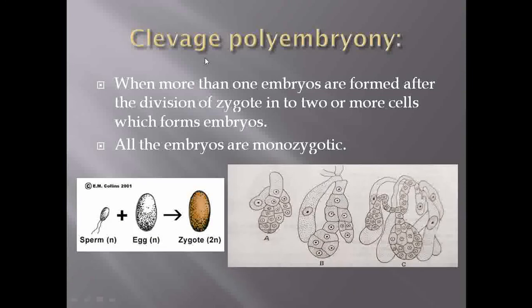The second type is cleavage polyembryony. According to Rigor, Michelius, and Green, the zygote undergoes continuous transverse division to form the embryo. Then, due to lateral divisions, another embryo is formed — meaning there is a cleavage of the zygote, and during each cleavage a new embryo forms. This type of embryo formation due to cleavage in the zygote is categorized as cleavage polyembryony.